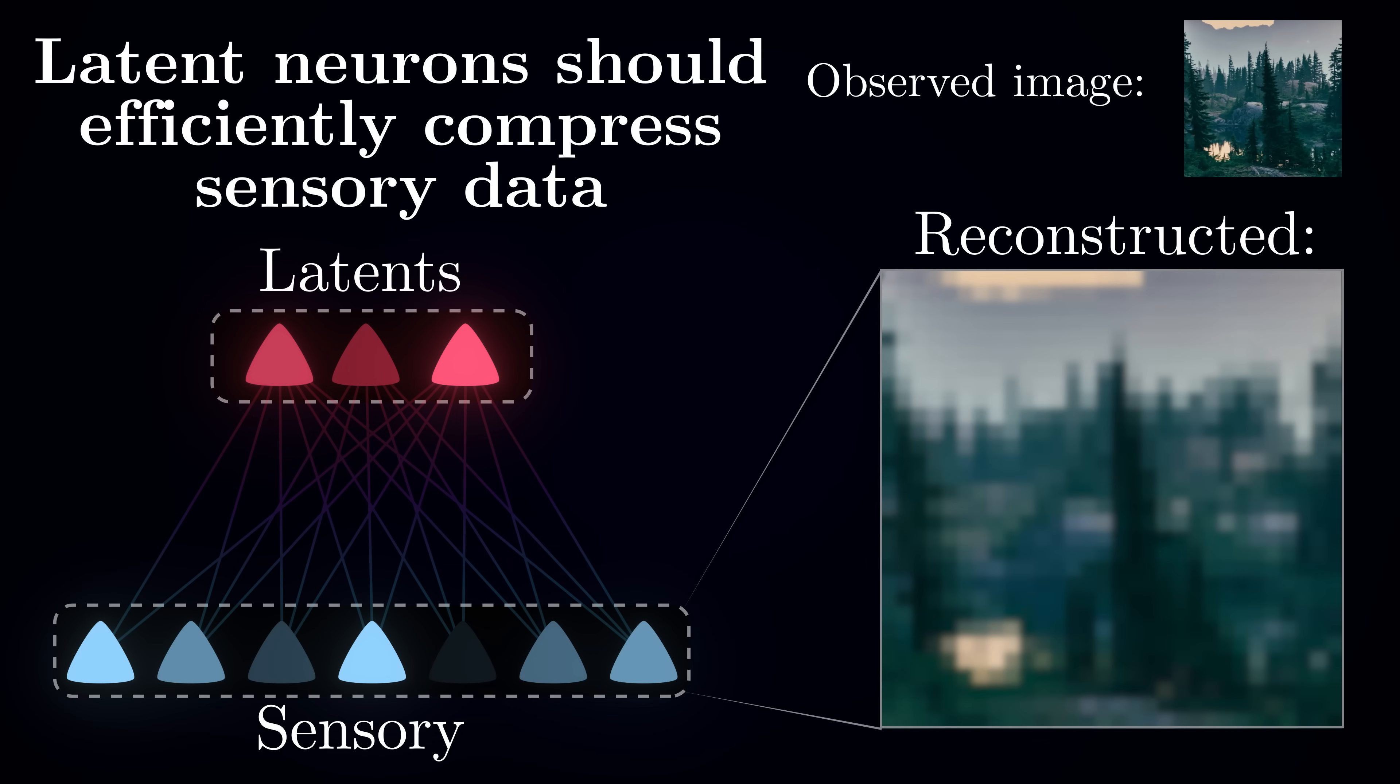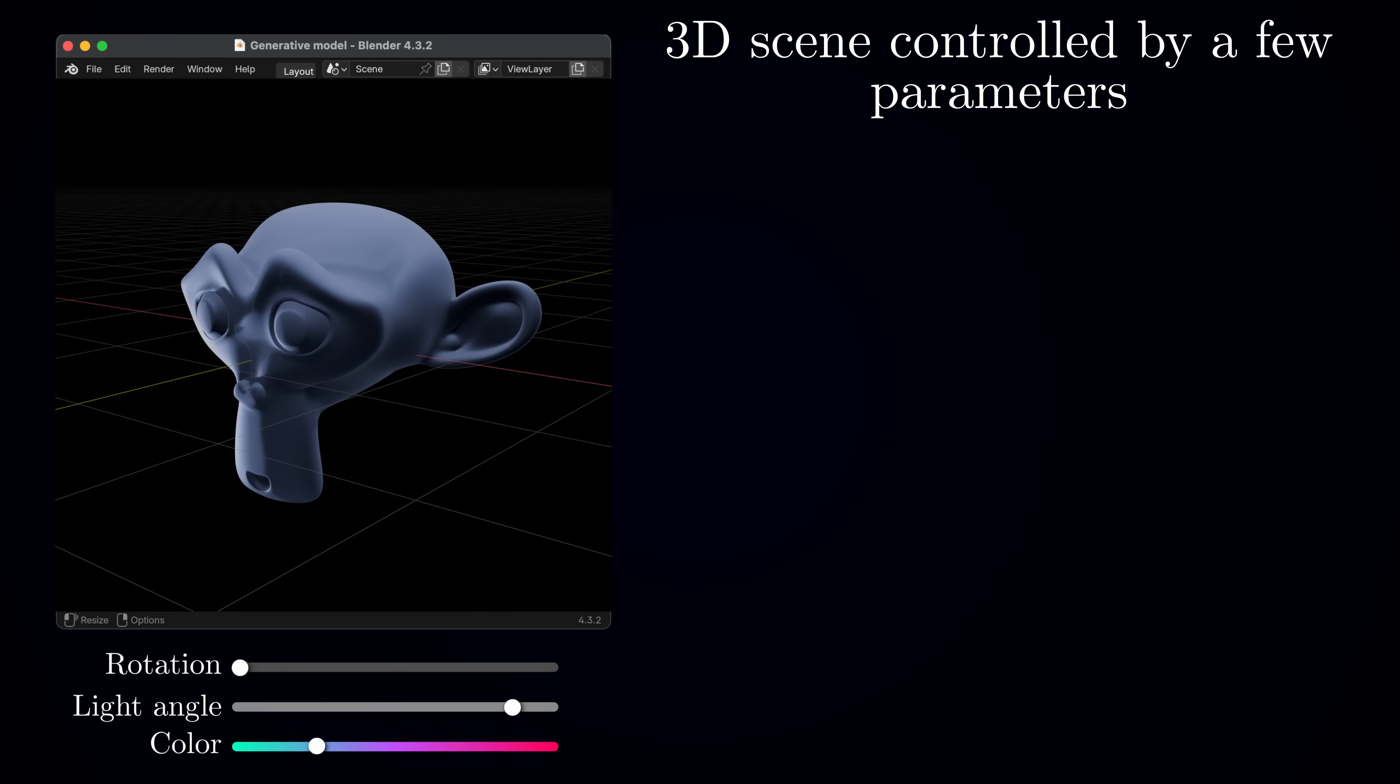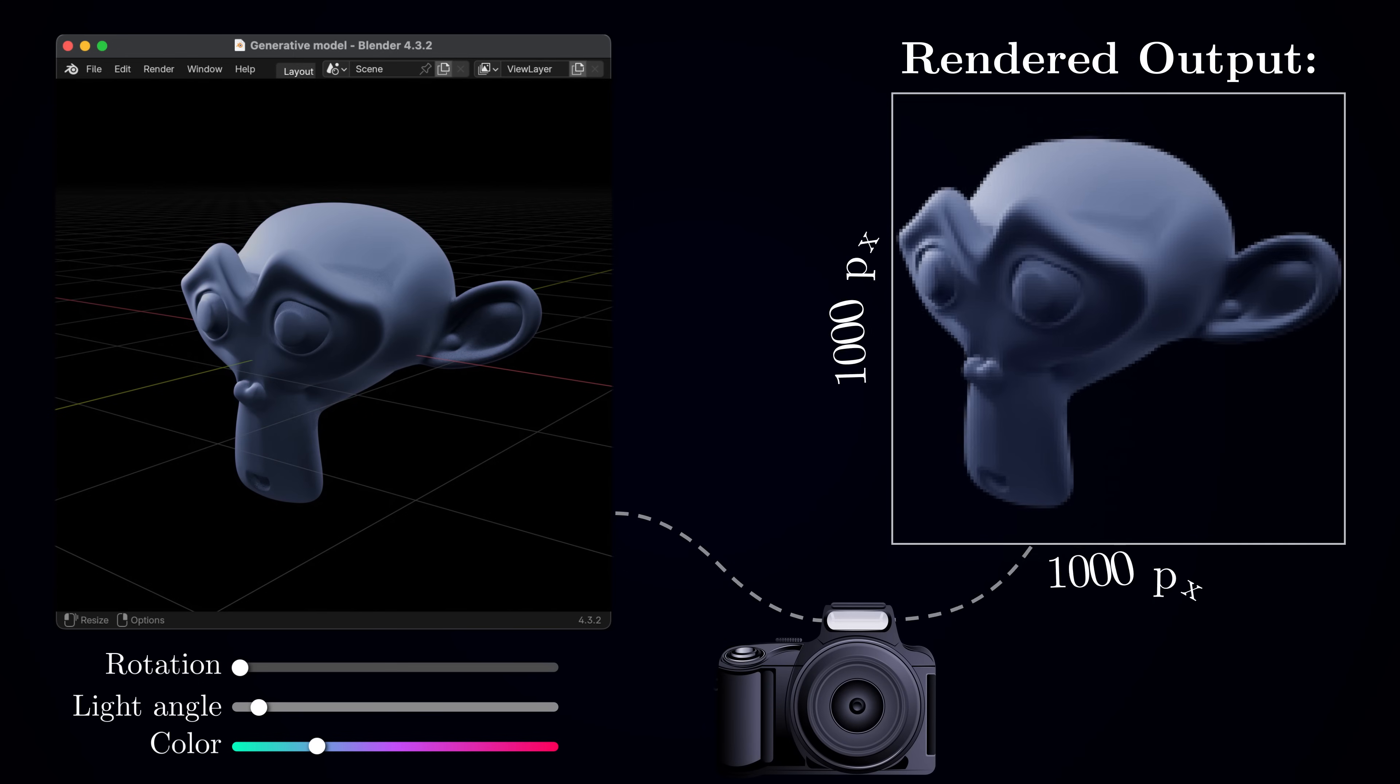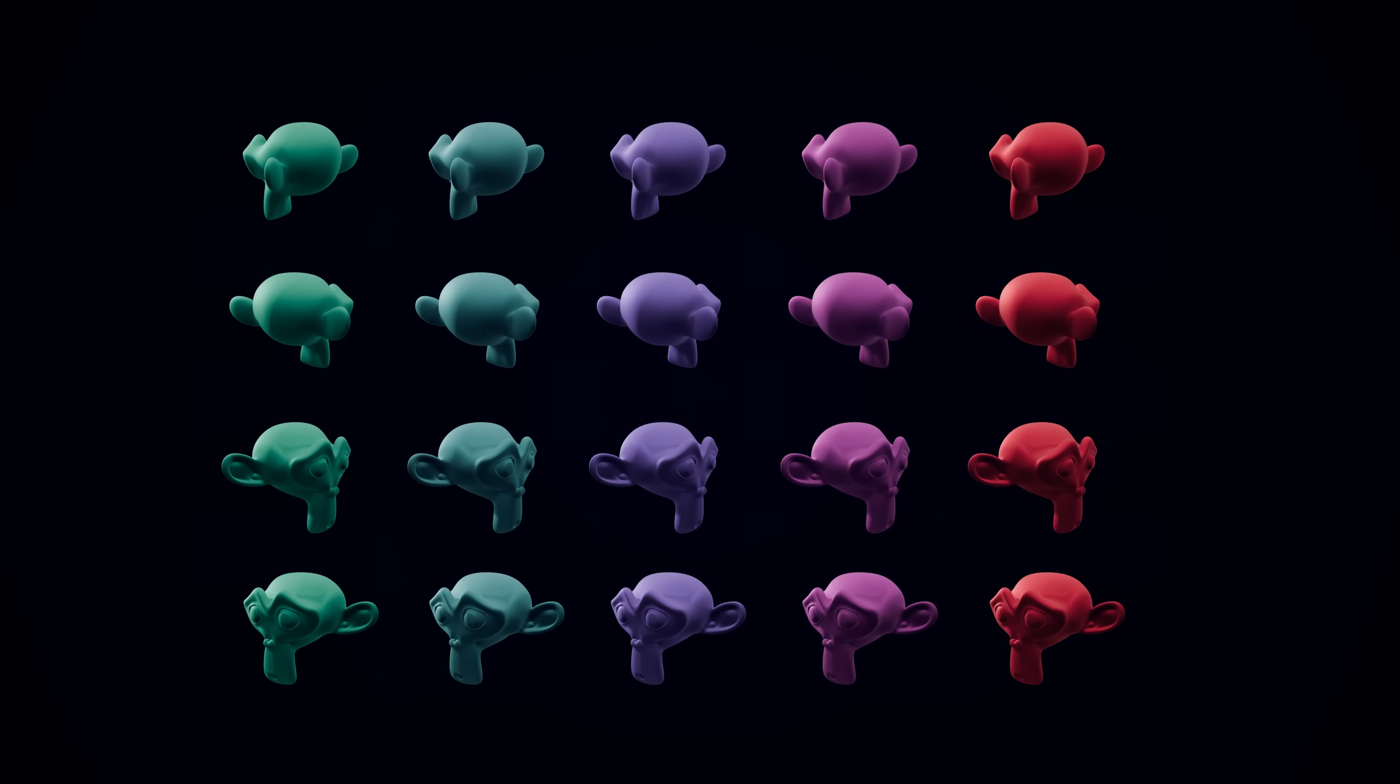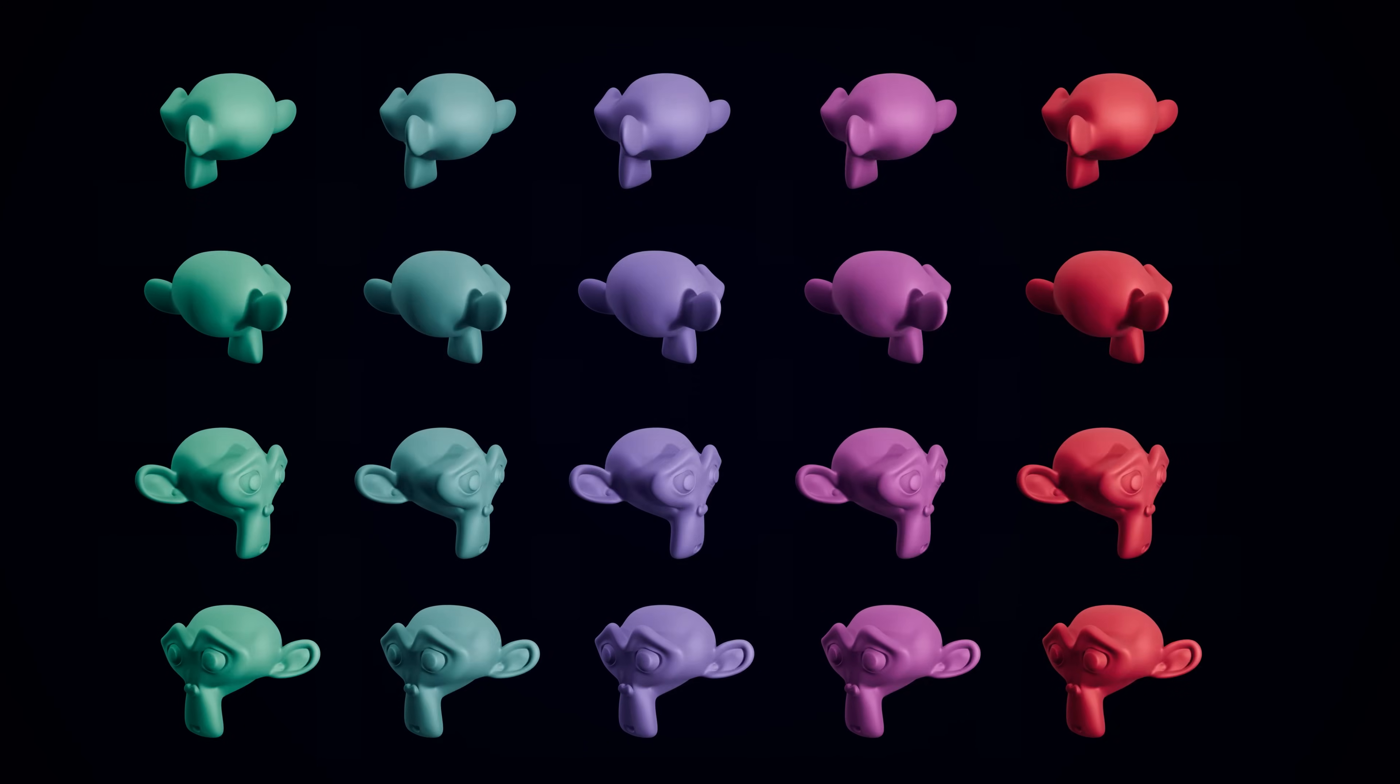Here is an intuitive way to think about this. Imagine a three-dimensional scene in a computer graphics program like Blender. The scene might have just a few adjustable parameters - sliders controlling the rotation of the object, the position of the light source, and the object's color. So when you render this scene, you get a high-resolution image, perhaps a thousand by thousand pixels. That is a million variables, each with its own color value. Yet all possible images you could render from the scene are controlled by just those three slider positions, which contain all the information you need to reconstruct the scene fully.